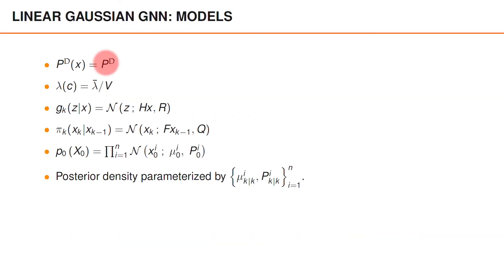A special case of the GNN filter is obtained when the models are linear and Gaussian. So we have a constant probability of detection, uniform clutter, Gaussian likelihood and transition density, and Gaussian initial prior.